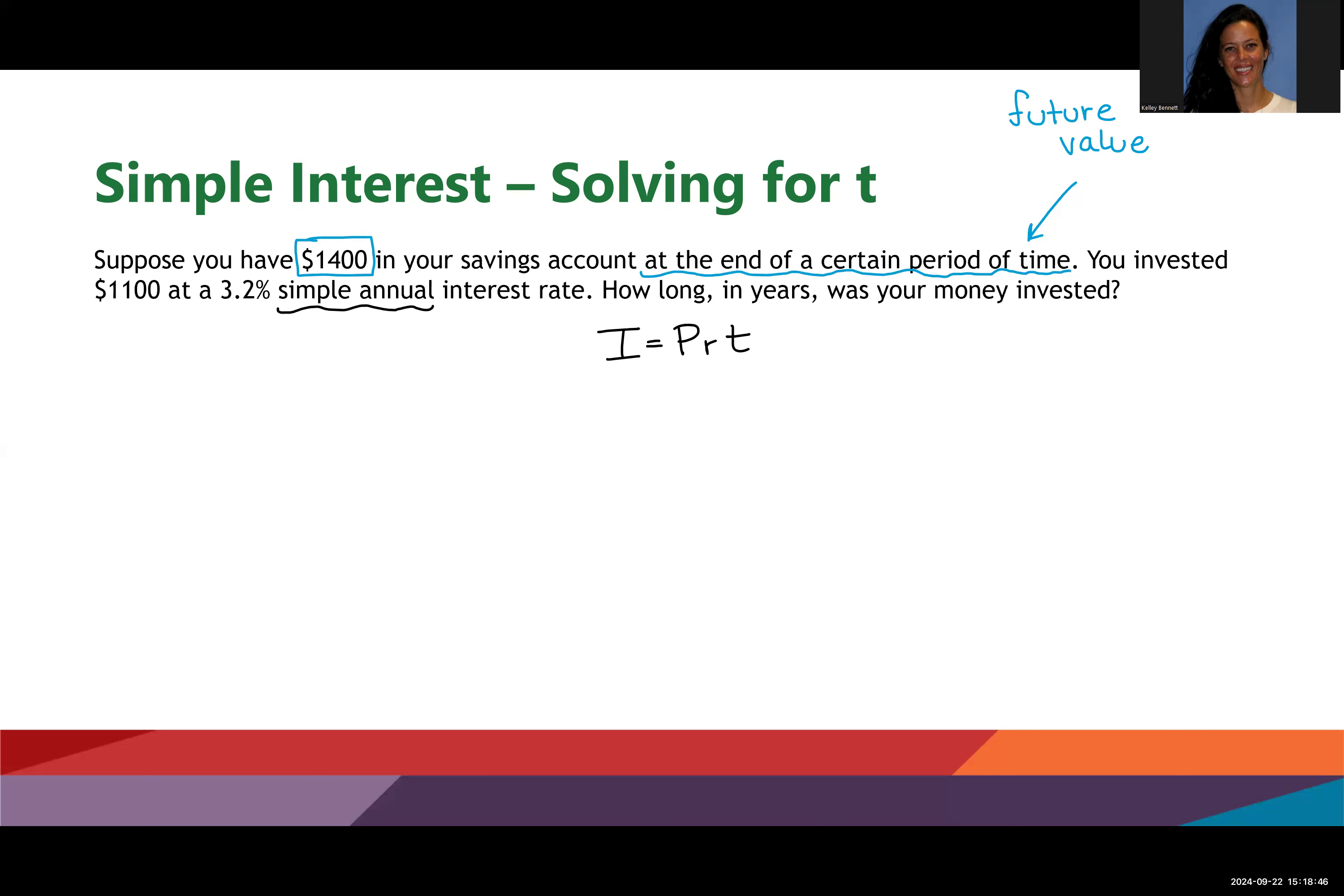I don't have a place to put future value in my formula, so I'm just going to hold that off to the side for a second. Second sentence: you invested $1,100. So this is my principle—this is what I started with. And I've got 3.2% simple annual interest, so that's R. And how long—that means I'm going to be solving this equation for T.